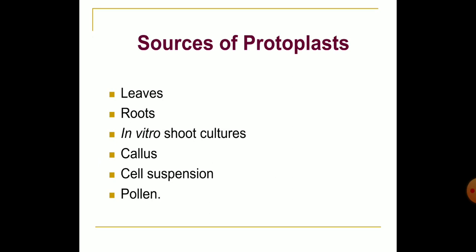The protoplast can be isolated from a variety of tissues, including leaves, roots, in vitro shoot cultures, callus, cell suspension and pollen. Among these, the mesophyll tissue of fully expanded leaves of young plants is most frequently used. In addition, callus and suspension cultures also serve as good sources for protoplast isolation.